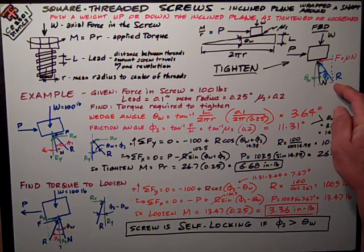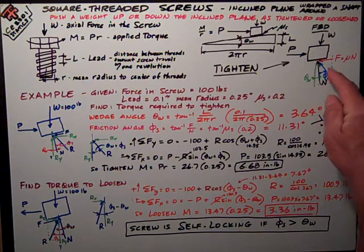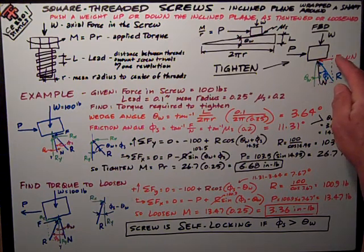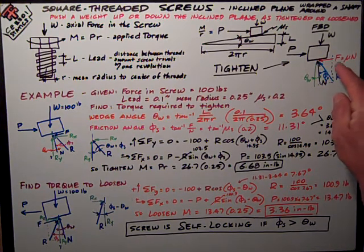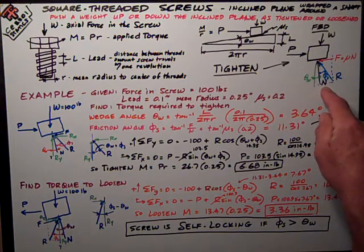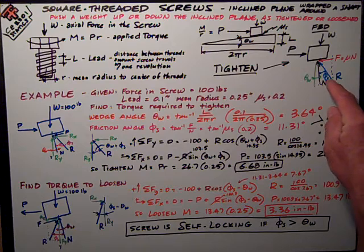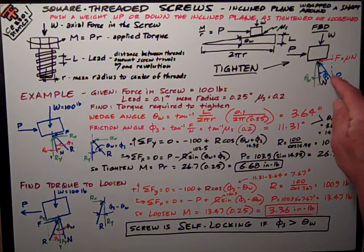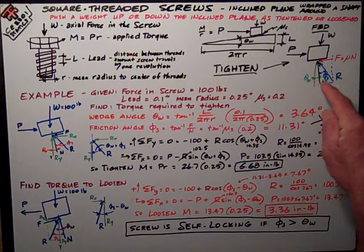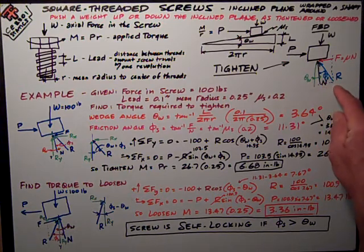I can resolve into one force R, the resultant, which is formed by these two components, the F friction force and the N normal force, acting in an angle of the friction angle φ_s from the normal to the resultant.